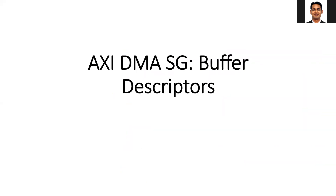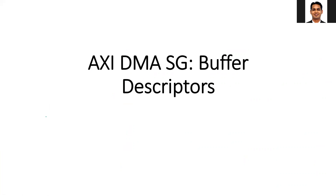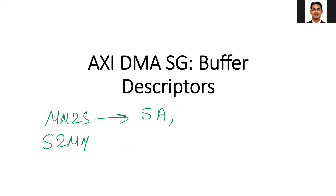Now the next important thing in the DMA is the buffer descriptor. The buffer descriptor will inform the DMA about the properties of the corresponding transfer. For example, there will be a separate buffer descriptor for MM2S and a separate buffer descriptor for S2MM. In case of MM2S, the buffer descriptor will tell us the starting address, the length of the data to be transferred, and a pointer to the next buffer descriptor, because the DMA should be able to move to the next buffer descriptor.